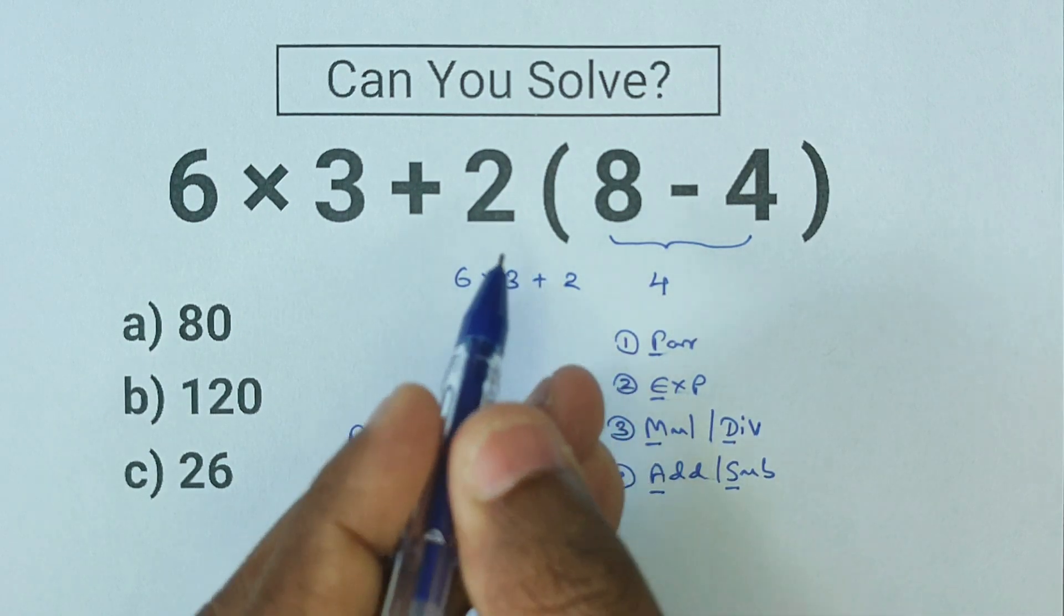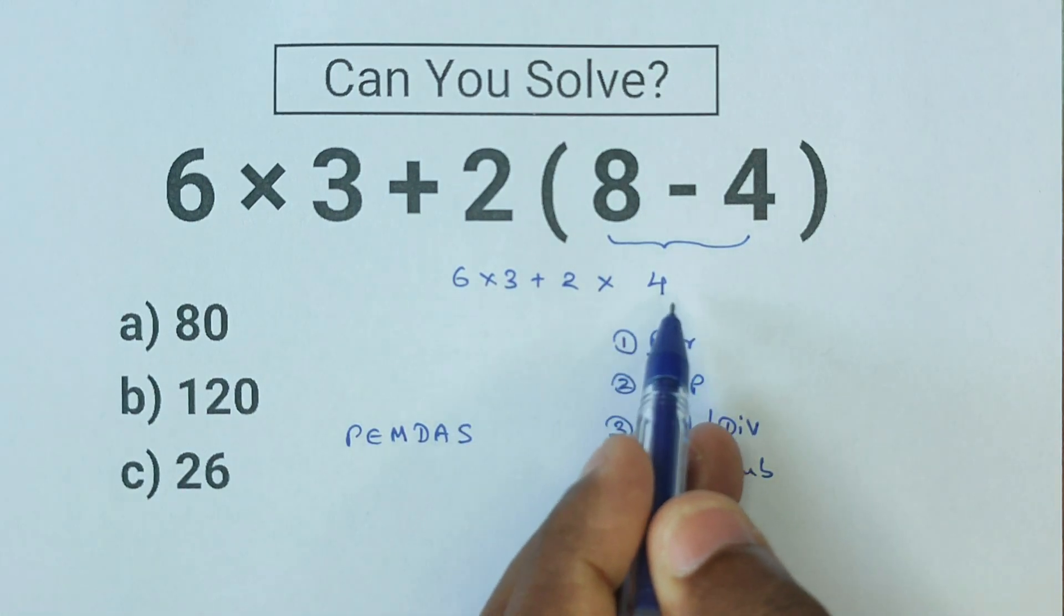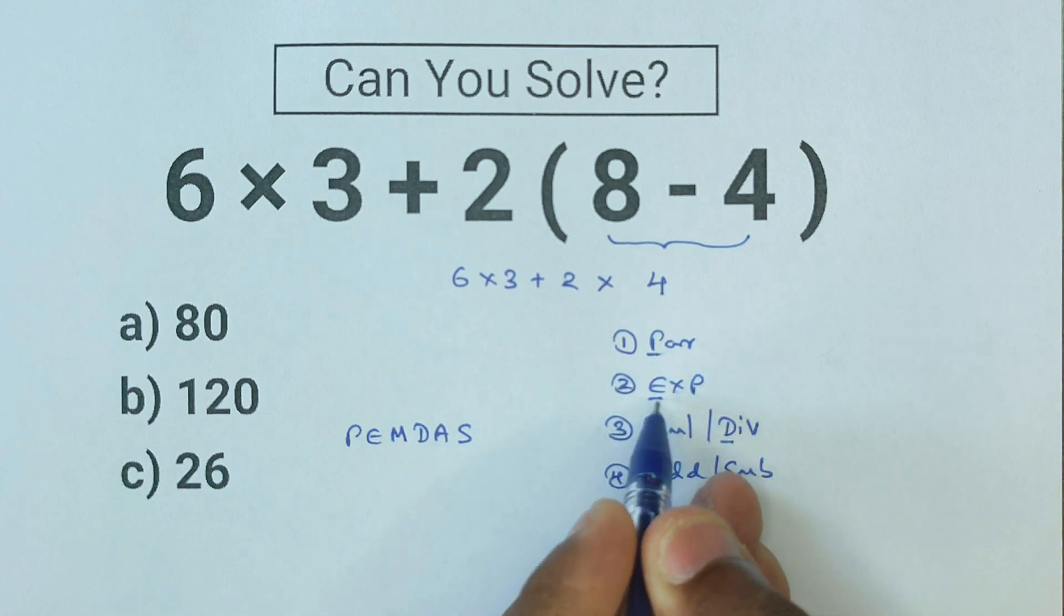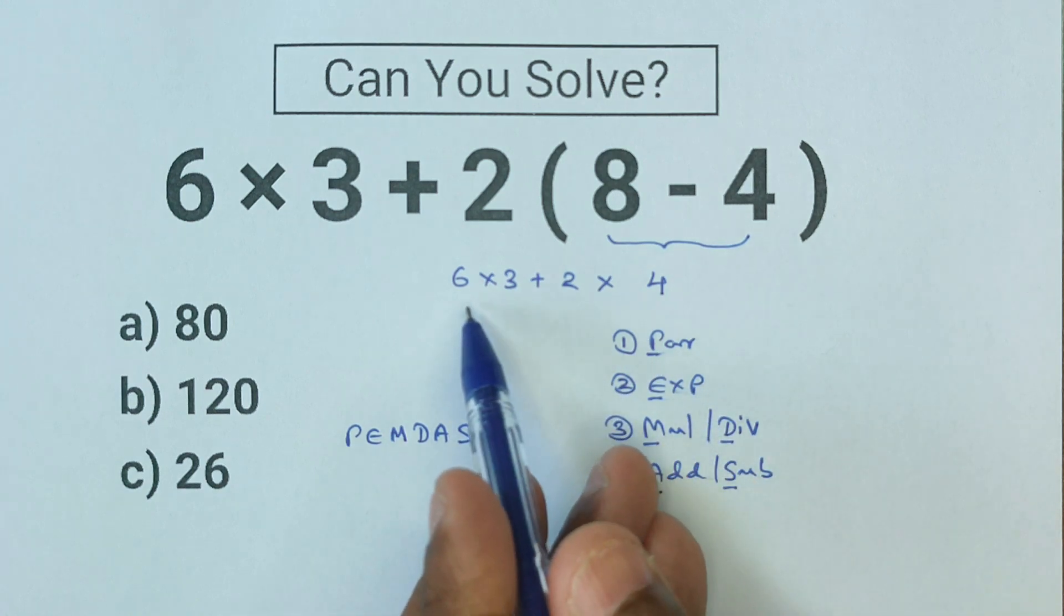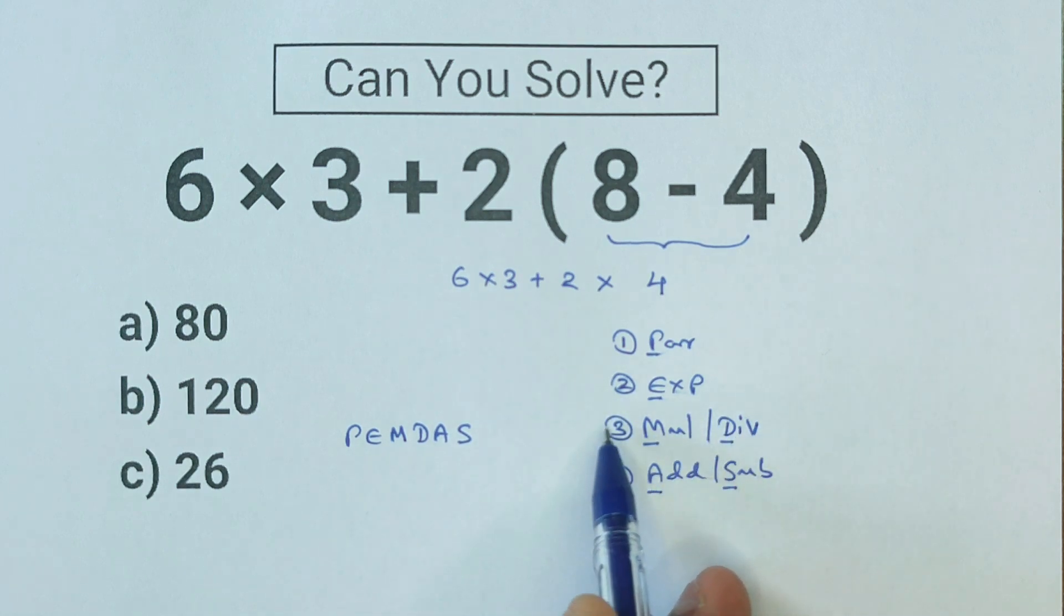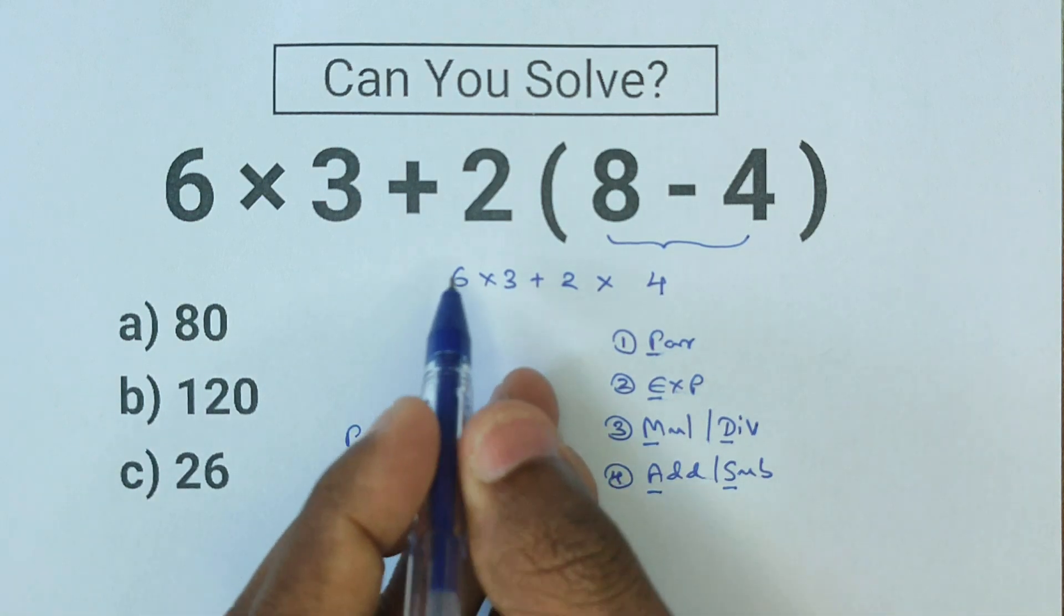Now there are no more parenthesis in the expression, so we can move on to our next order of operation which is exponents. There are no exponents in this expression, so let's move on to the next order of operation: multiplying and dividing. Here we have a multiplication 6 × 3, so we have to do this next. 6 × 3 is 18.